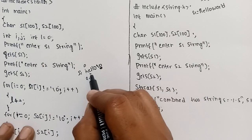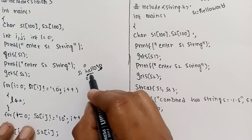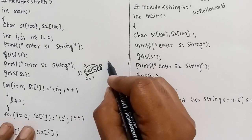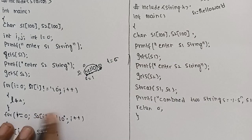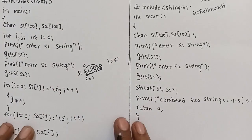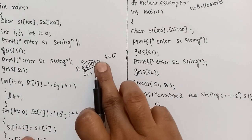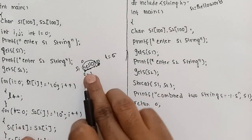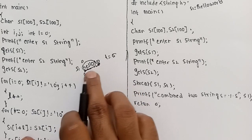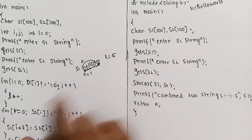When i equals 0, the character is not equal to null, so length becomes 1, then 2, 3, 4, 5. So S1 length is found to be 5. When the null character is reached (value 0), the loop stops. The string 'Hello' has length 1, 2, 3, 4, 5.